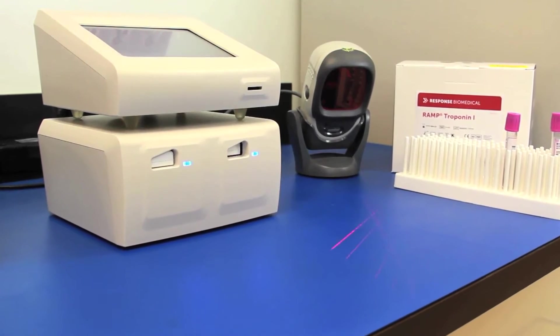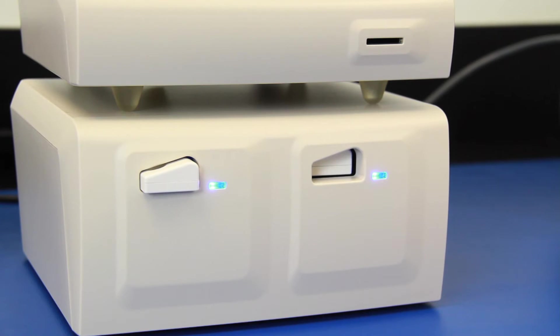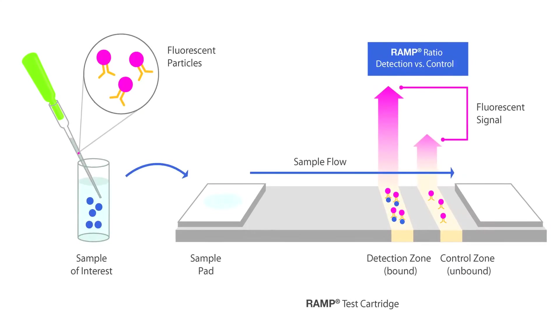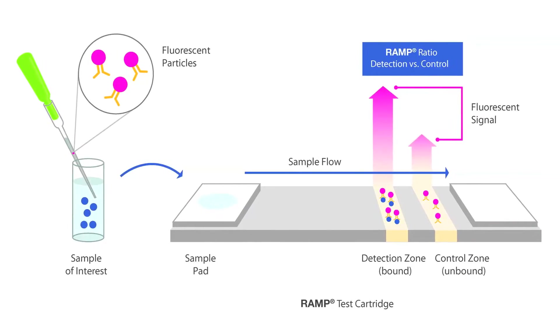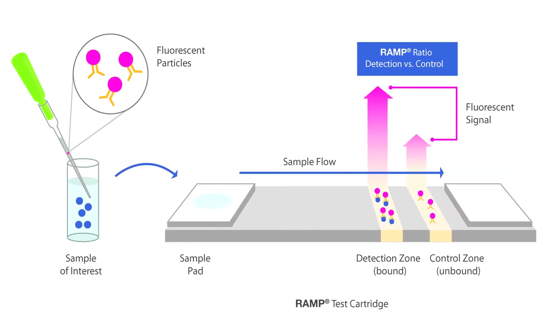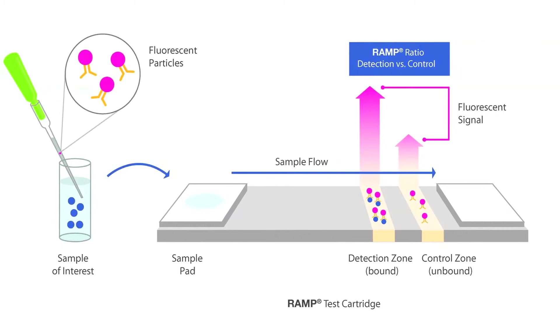The reader will scan the barcode and also ensure the detection of sample flow. As the sample flows from one end of the cartridge to the other, it encounters two zones: the detection zone, which measures bound particles when the biomarker is present, and the control zone, which measures the unbound particles.